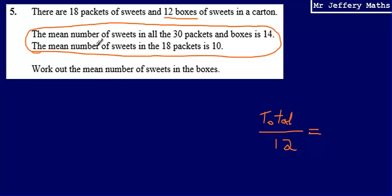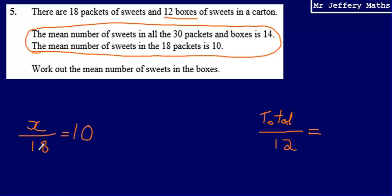I know that the mean number of sweets in the 18 packets is 10. So the total number of sweets divided by the 18 packets gives an answer of 10, which means the total number of sweets — which I'm calling X — would be 180. So the total sweets in the packets is 180.